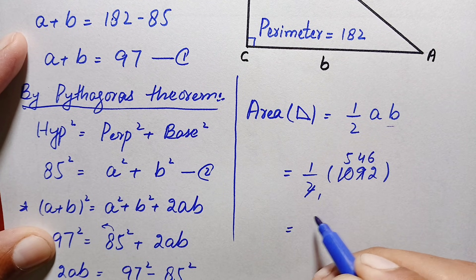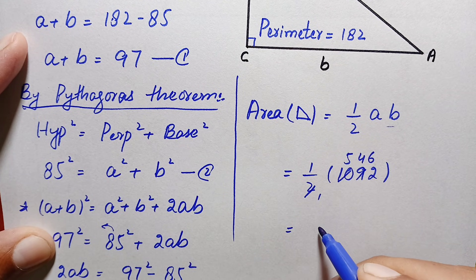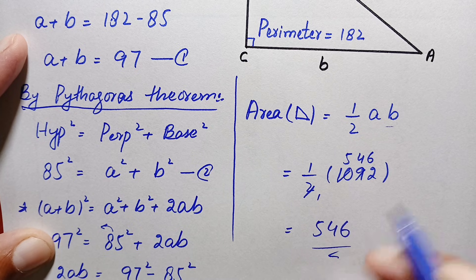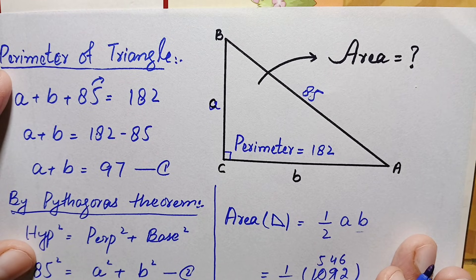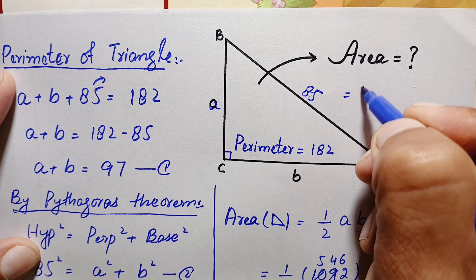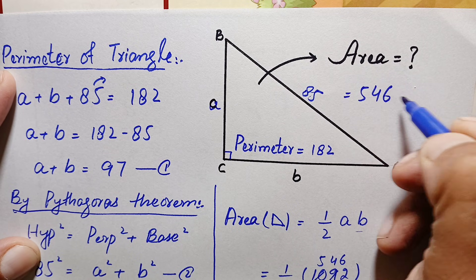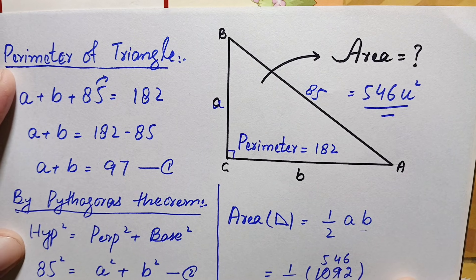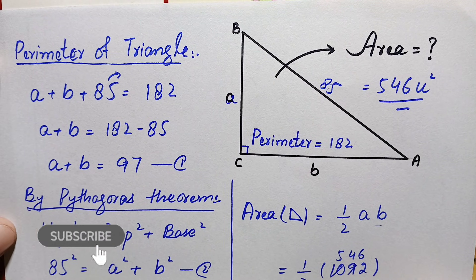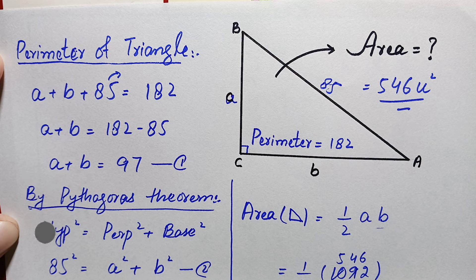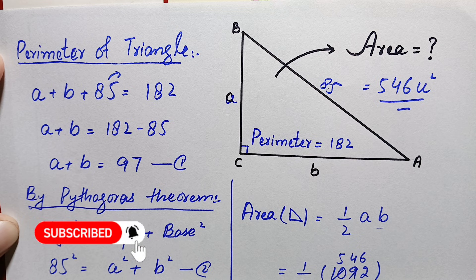Therefore, the area of this right angle triangle is 546 square units. That is our final answer. Don't forget to subscribe to the channel for more interesting step-by-step geometry solutions. Thanks for watching!